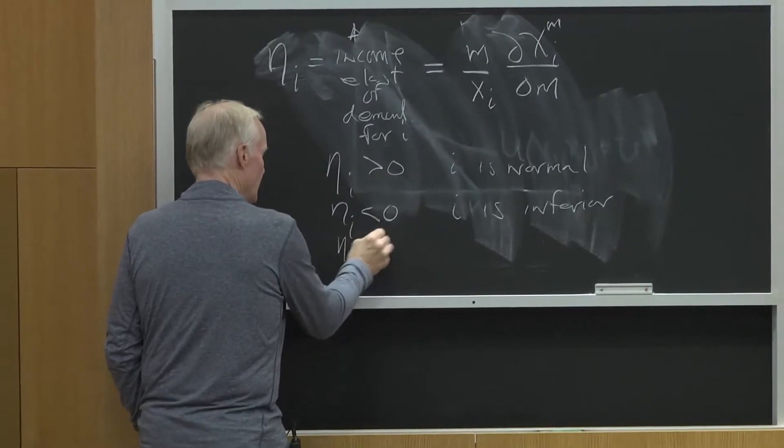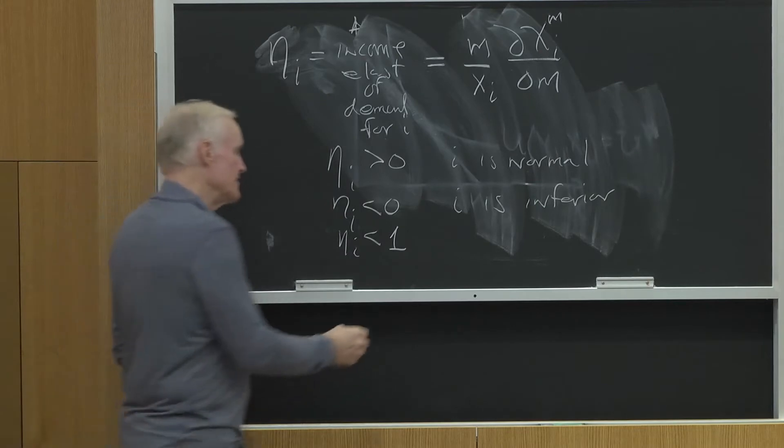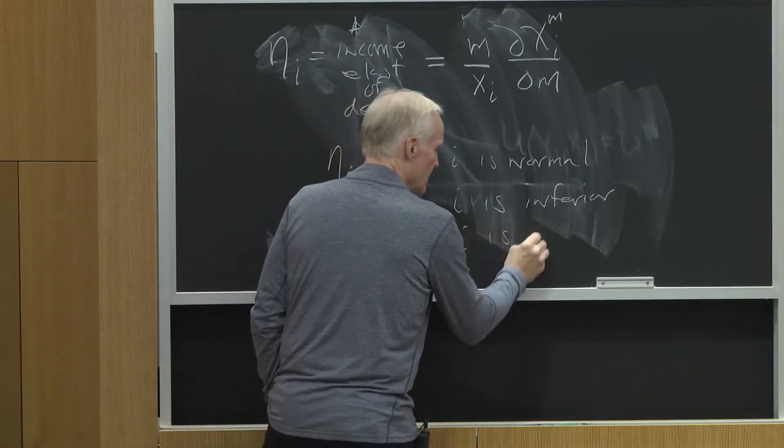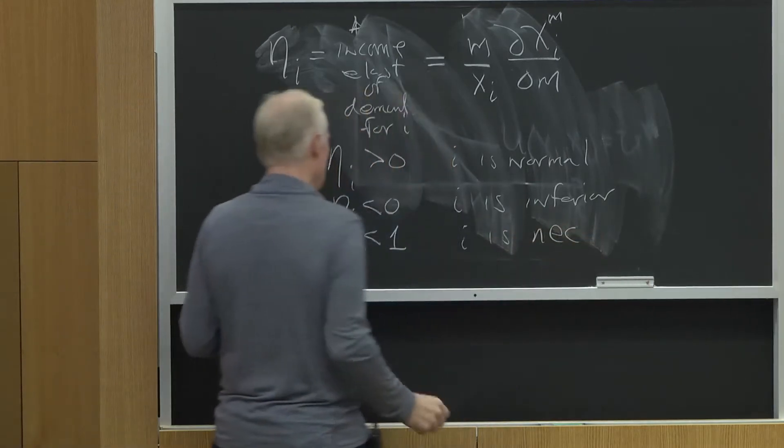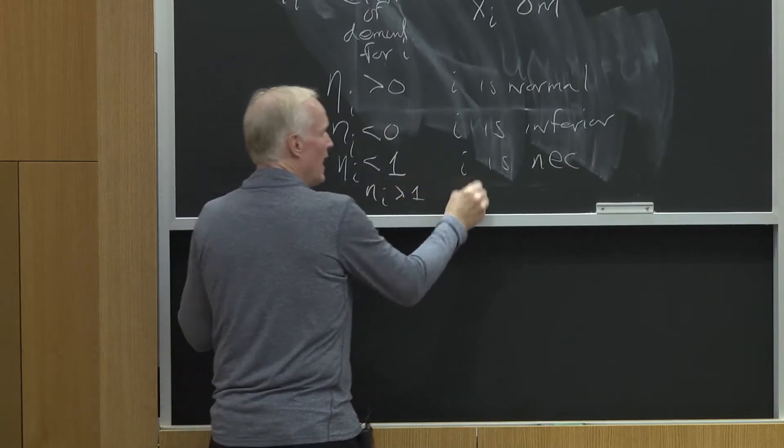When a to i is less than one, i is a necessity. When a to i is bigger than one, i is a luxury.